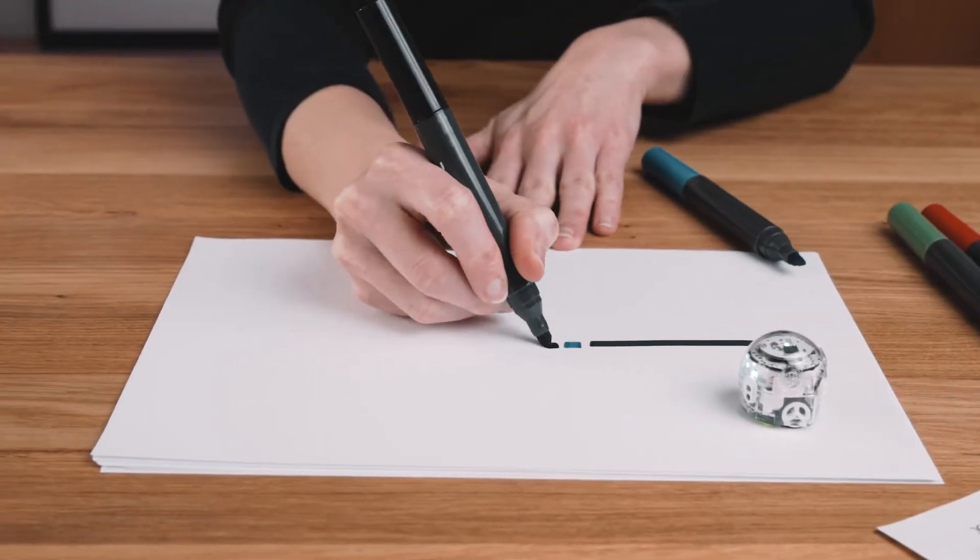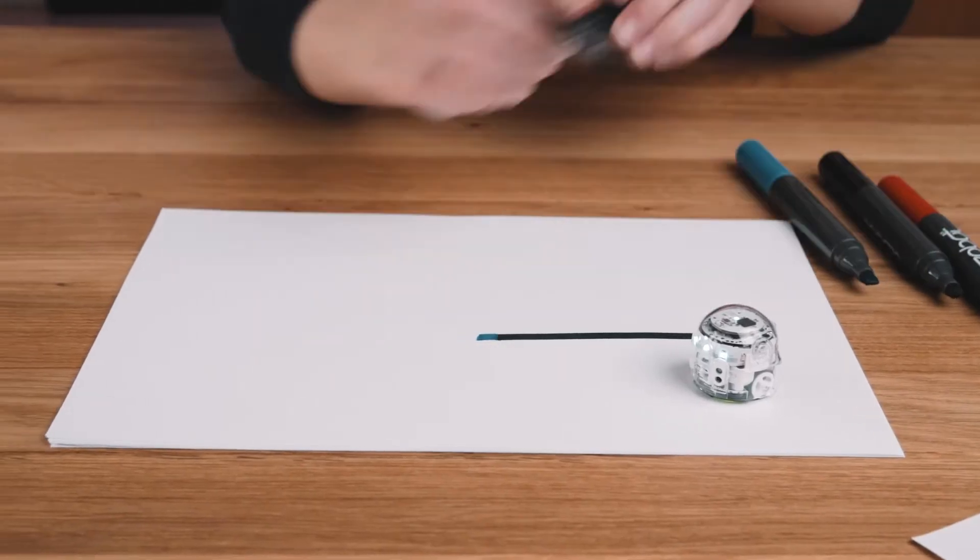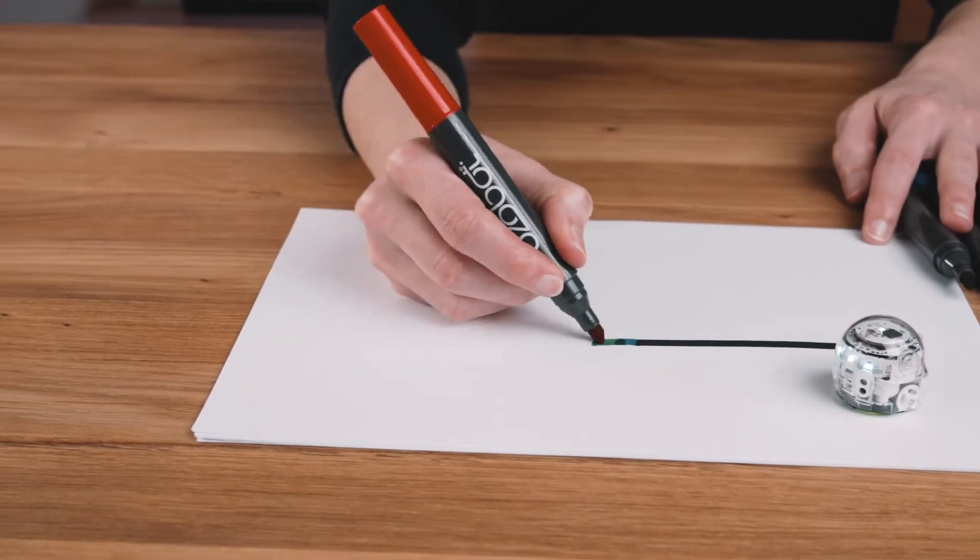Try not to leave any white space between the colors of your code, or overlap them too much. Colors should be just touching.